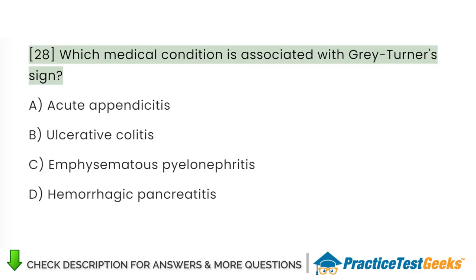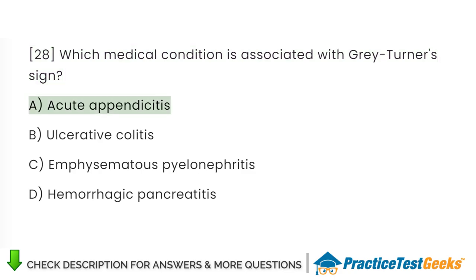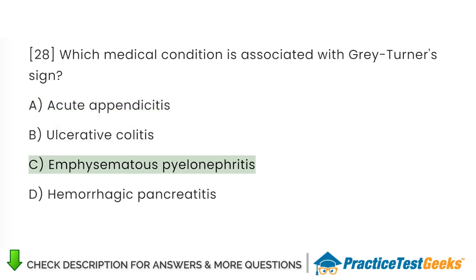Which medical condition is associated with Grey Turner's sign? A. Acute appendicitis. B. Ulcerative colitis. C. Emphysematous pyelonephritis. D. Hemorrhagic pancreatitis.